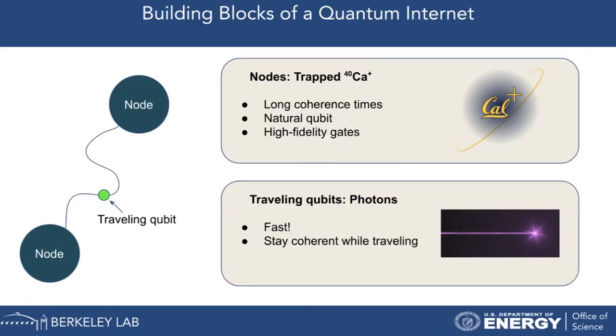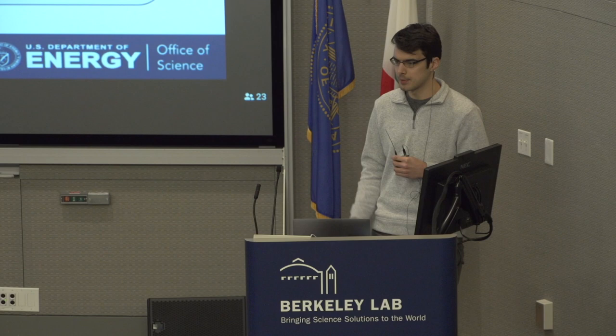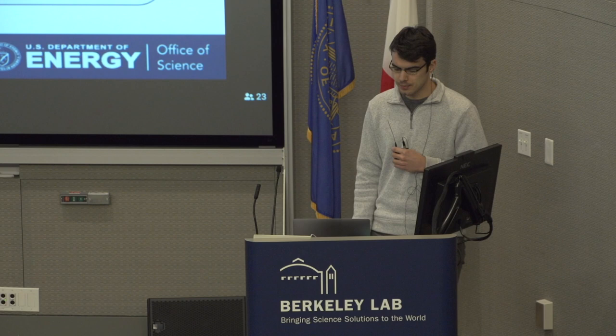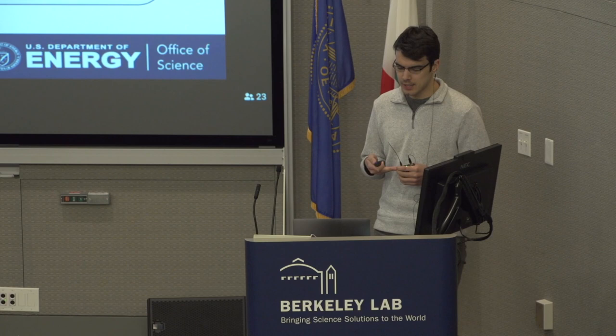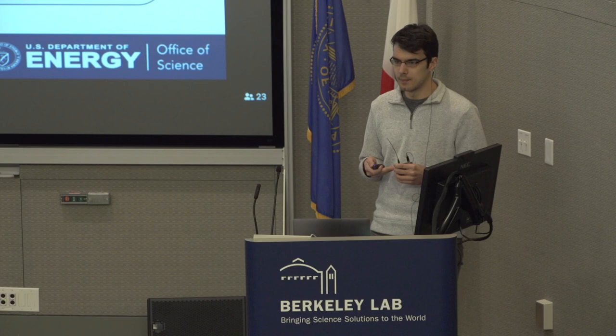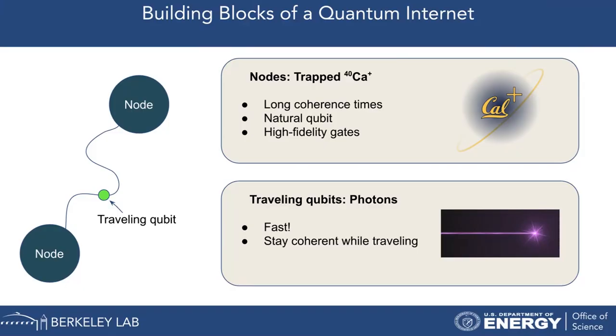We're going to build a system where the nodes are trapped calcium-40 ions — single atoms held in place — which we can address with lasers. Those atoms emit photons, and we're going to collect those photons and send them back and forth between UC Berkeley and LBNL. We choose trapped calcium ions over options like superconducting qubits or color centers because they have very long coherence times — seconds or longer — meaning quantum information is held for a long time, and you can with high fidelity put them in a specific quantum state. Photons are the natural choice for a traveling qubit because they travel at the speed of light.